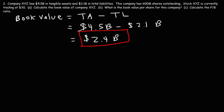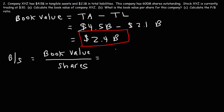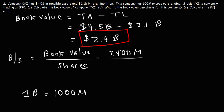Now part B: what is the book value per share for this company? The formula is the book value for the entire company divided by the shares outstanding. The book value is $2.4 billion, which I'll convert to $2,400 million, since $1 billion equals $1,000 million. The shares outstanding is 600 million, so $2,400 divided by $600 is the same as $24 divided by $6. The book value per share is $4.